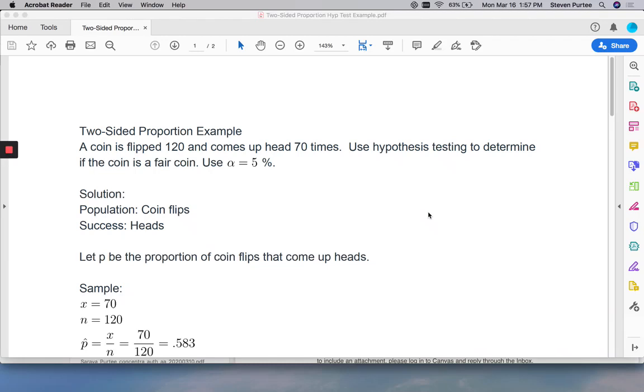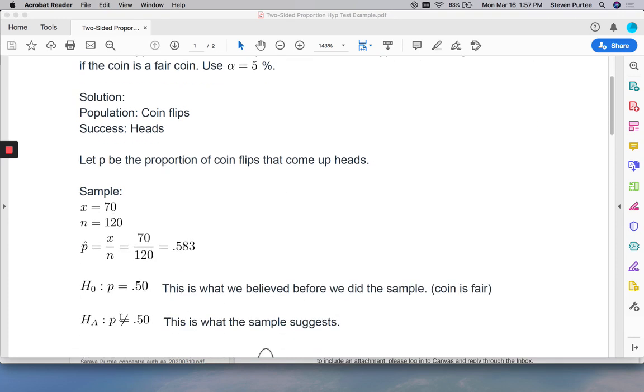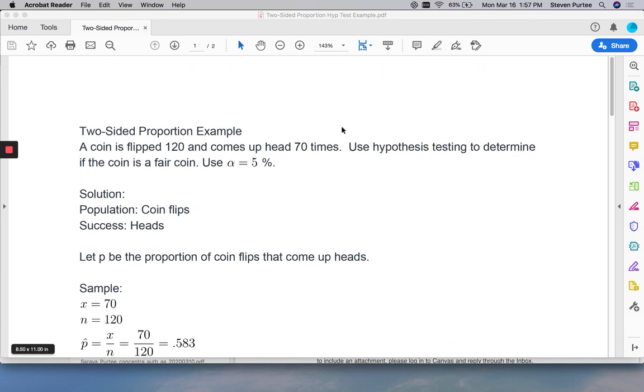This is an example of a two-sided proportion hypothesis test. Two-sided is when we do the not equal to. So we're going to flip a coin 120 times and we get heads 70 times. We're going to use hypothesis testing to figure out if the coin is fair.